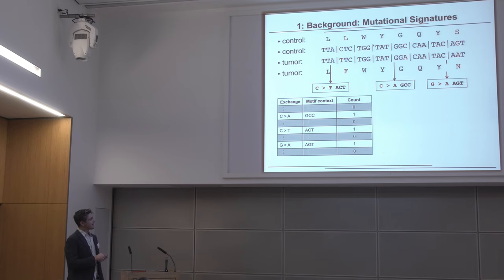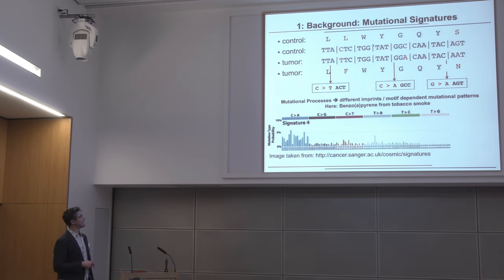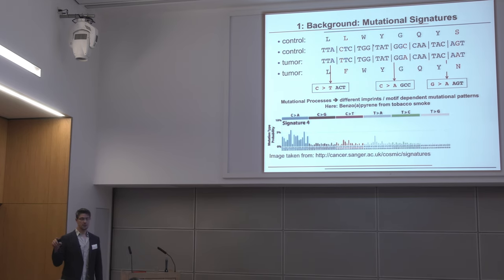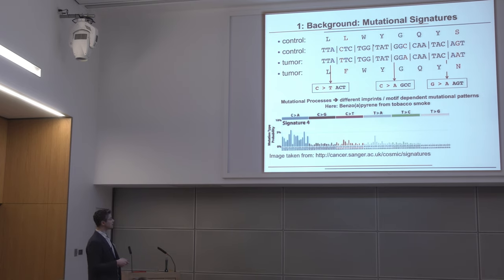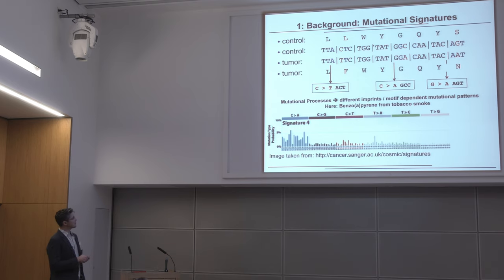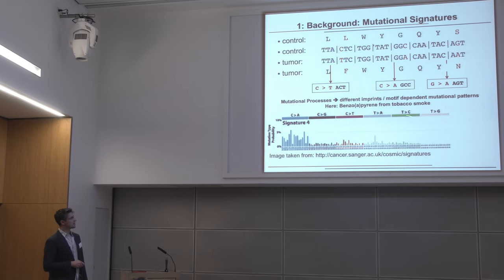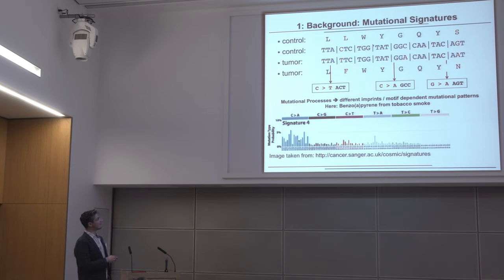We do this because the distribution is not homogeneous across different motif contexts. If there is a mutagenic agent or mutational process, it has a preference for specific features. Here is signature 4, which comes from the action of benzopyrene — the main carcinogen from tobacco smoke — and you can see it has a heavy preference for C-to-A nucleotide exchanges. Even within C-to-A, the 16 different possibilities for triplet motif context are not homogeneous.